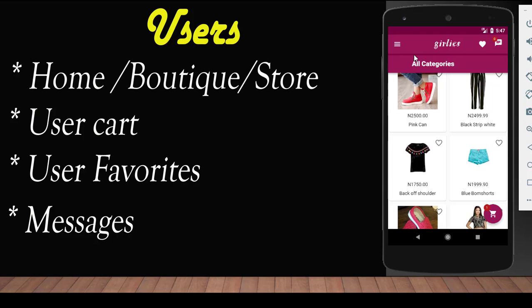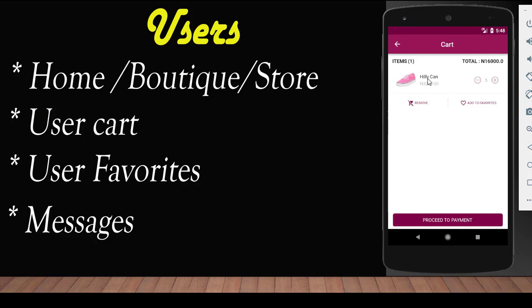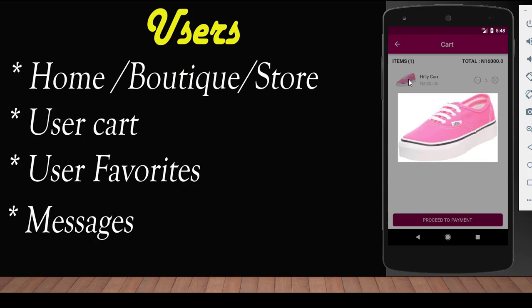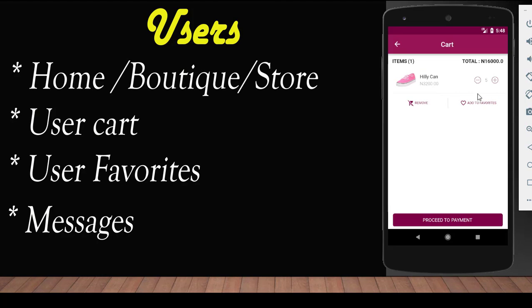In the home screen, we also have the user cart in this floating action button here. If you click on this floating action button, it takes you to the user cart where you see the items purchased by the user. The user could click on the image and there's a hero animation added where the image comes out. The user could also reduce or increase the quantity of the item, and the price will adjust accordingly.